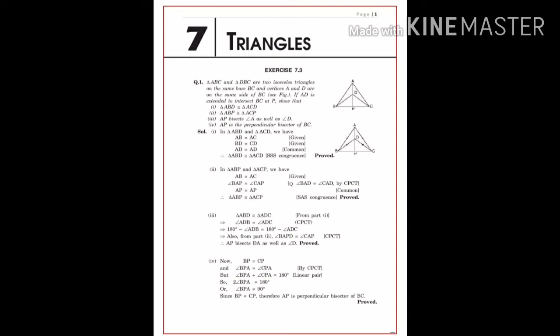Now, third: Since Triangle ABD is congruent to Triangle ACD from equation one, Angle ADB equals Angle ADC by CPCT. And since these two angles form a linear pair, both sides add up to 180 degrees.